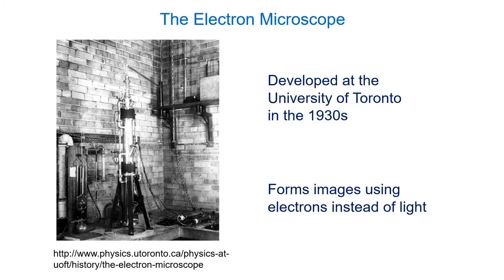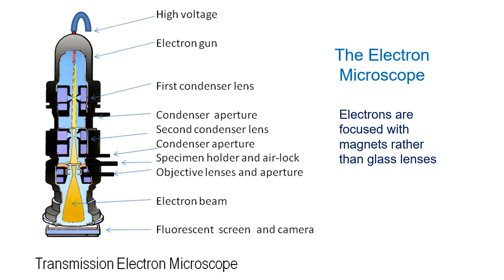One of the major players in the early development of the electron microscope was the University of Toronto. In an electron microscope, electrons are forced into a tungsten wire at the top, liberating electrons that flow down to a specimen. The fundamental structure hasn't changed much: at the top is an electron gun containing a tungsten filament similar to an incandescent light bulb. A high voltage passes through it, liberating high-energy electrons that form an electron beam. Since electrons have mass and can't pass through glass, we use electromagnets rather than glass lenses to focus the beam.